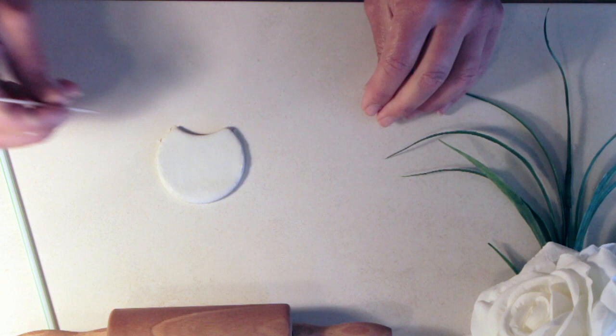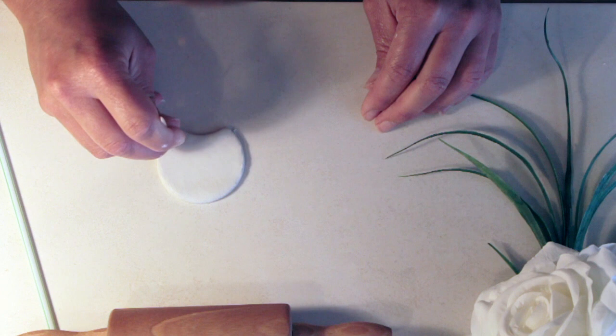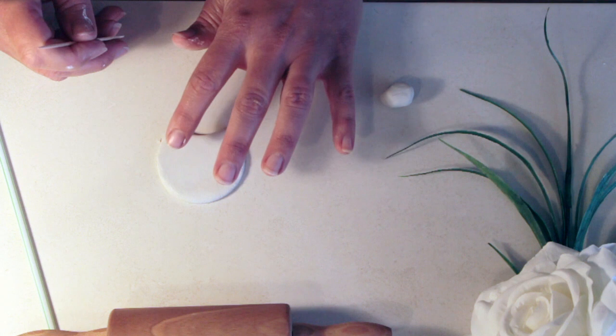I've got a cocktail stick here and I'm going to create the holes for where we're going to put the necklace through. You just simply press all the way down to the surface below and gently circle round until you get the size hole that you're after.